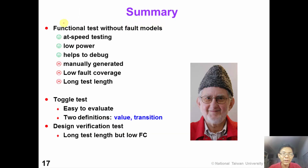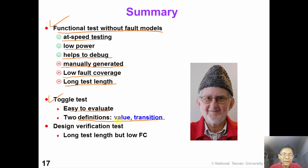In summary, in this video we have shown functional testing without full model. The advantages are at-speed testing, low test power, and it helps the designer to debug design errors. However, it takes a lot of effort to manually generate test patterns, and the fault coverage is typically very low and the test length is typically very long. We introduced toggle test, which is very easy to evaluate, with two definitions of toggle coverage based on value or transition. We also introduced design verification test, where the test length can be long and fault coverage can be low. That's all for this video. Thank you for watching.